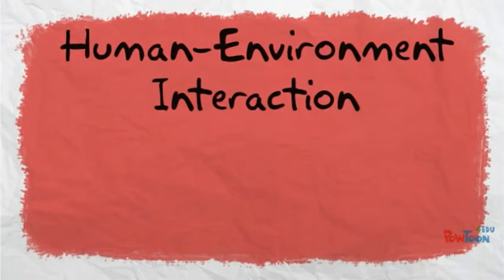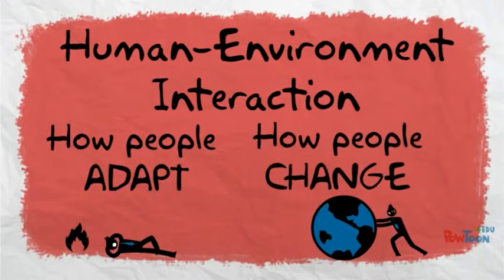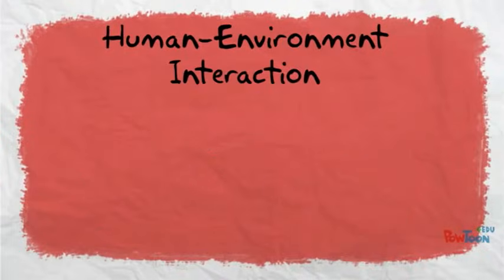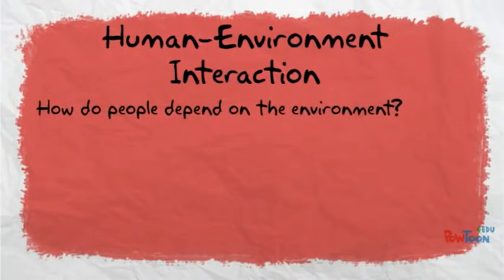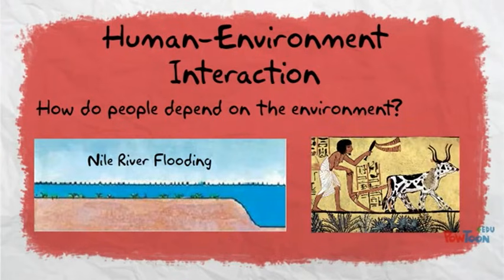Third on my list is human-environment interaction. Human-environment interaction looks at the relationships between people and their environment. How do people adapt to their environment? How do they change it? How do people depend on their environment? In ancient times, the annual flooding of the Nile River produced good soil, which allowed the Egyptians to grow crops in order to survive — so they depended on their environment.